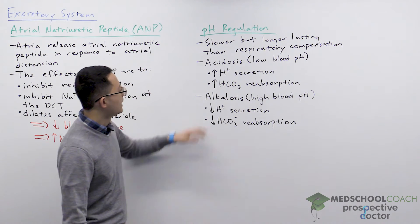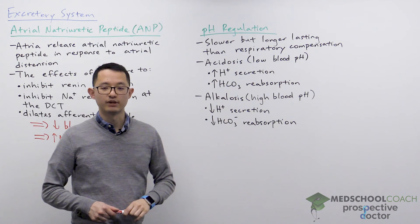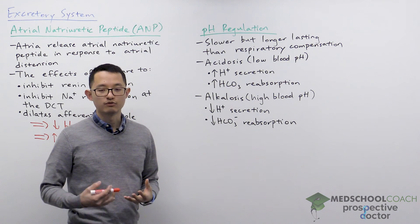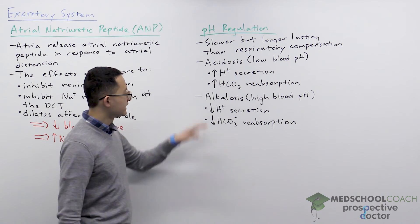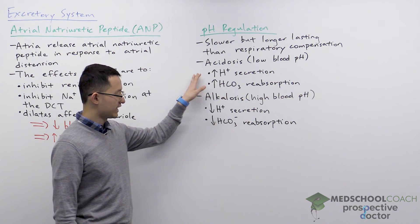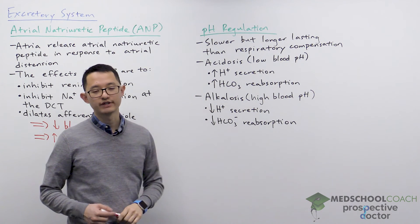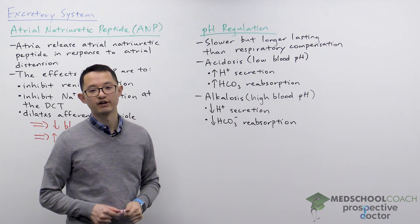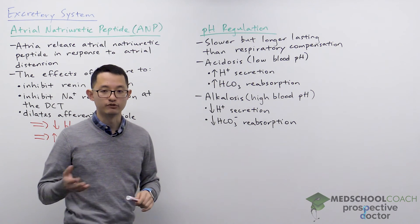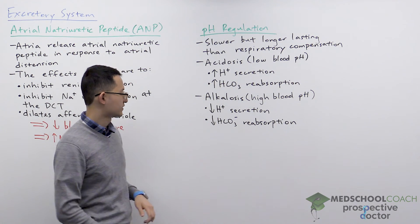In response to acidosis, or decreases in blood pH, the kidneys will respond by increasing secretion of hydrogen ions (H+) and also increasing reabsorption of bicarbonate. Combined, this will help to increase the blood pH.